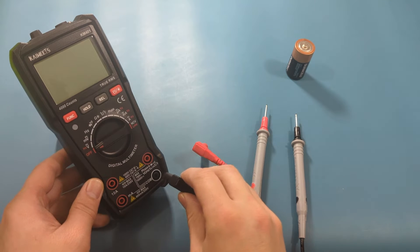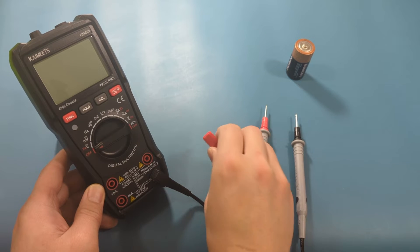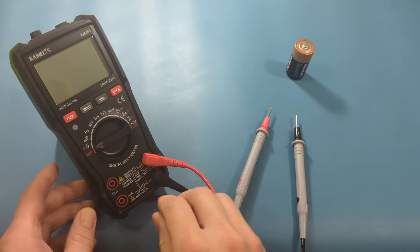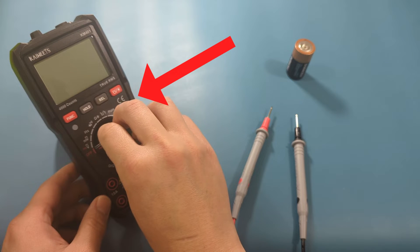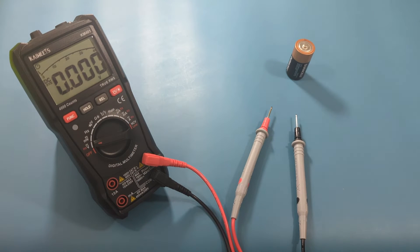Attach the black probe to the COM port and the red probe to the port for voltage and ohms. Rotate the dial to the setting for voltage, identified by the squiggly line above the letter V.